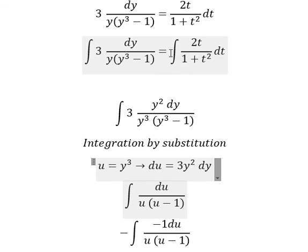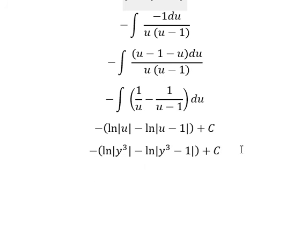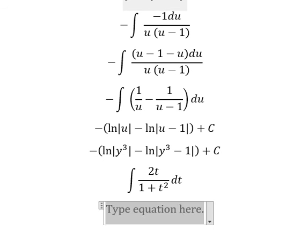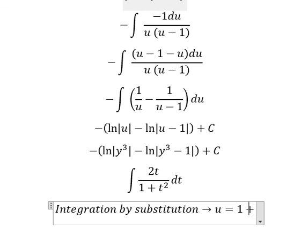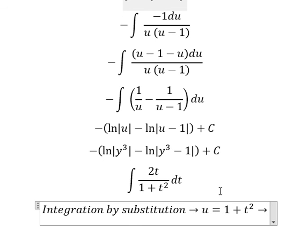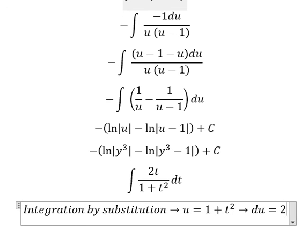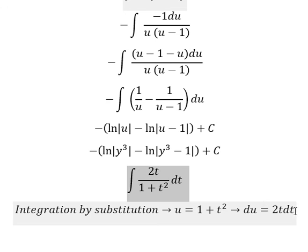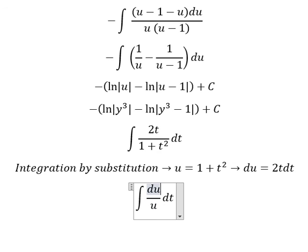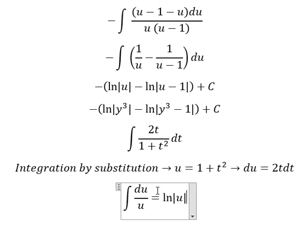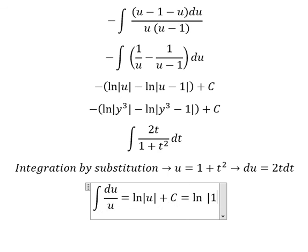Now let's go to the second integral. We need to use integration by substitution. So I will put u equal to 1 plus t squared. Taking the derivative of both sides, we have du equals 2t dt. So 2t dt we change by du, and the integration gives ln of the absolute value of u, which is ln of the absolute value of 1 plus t squared.